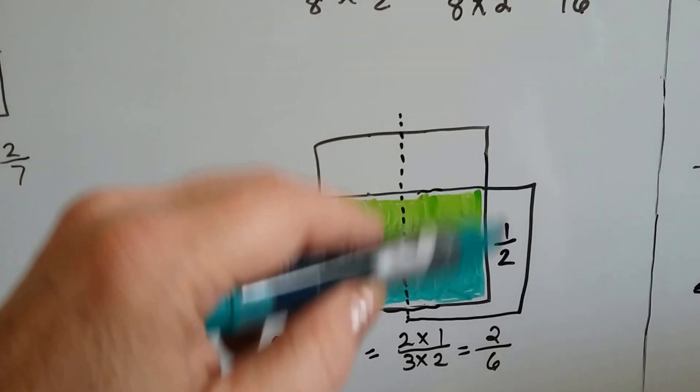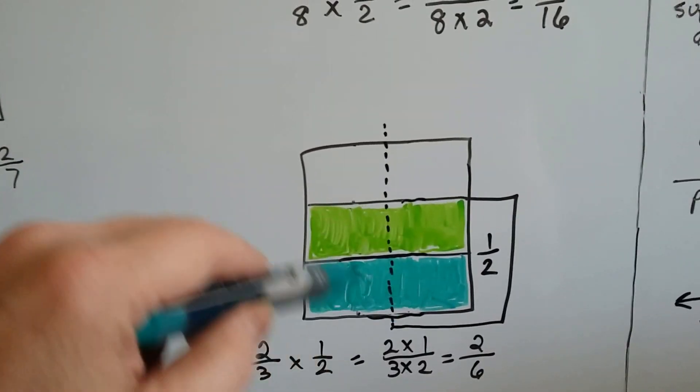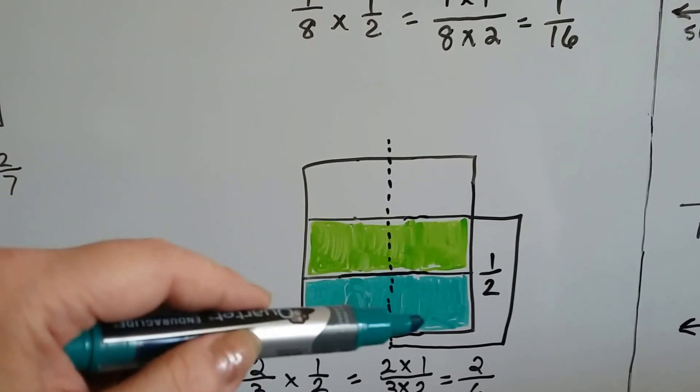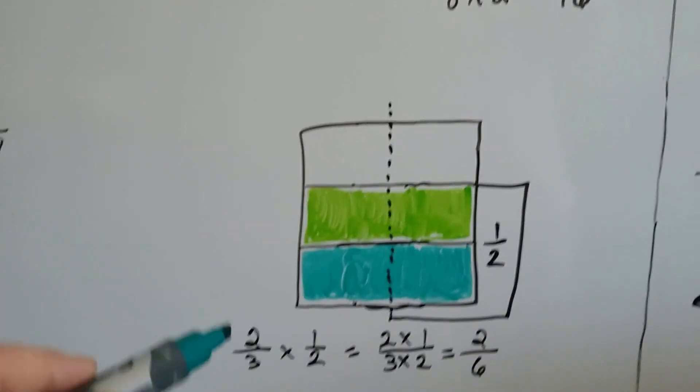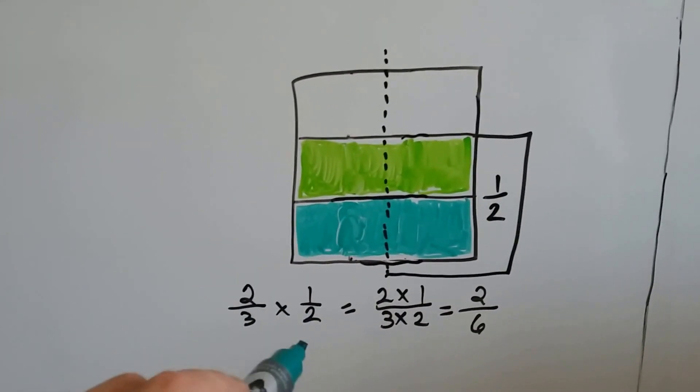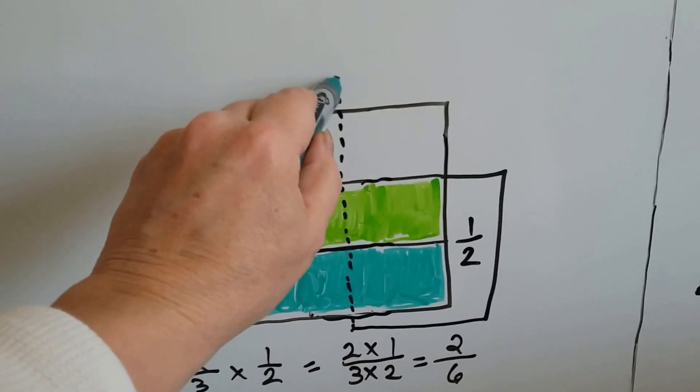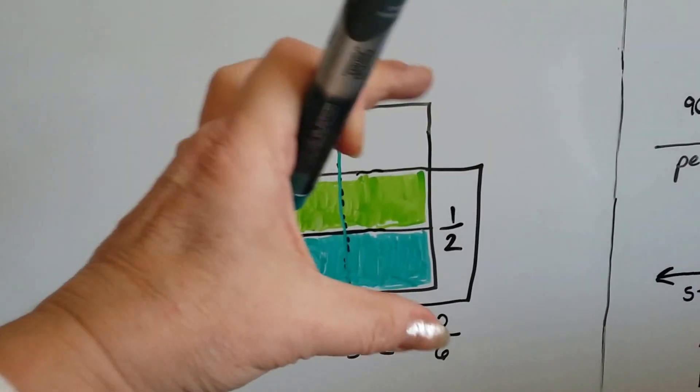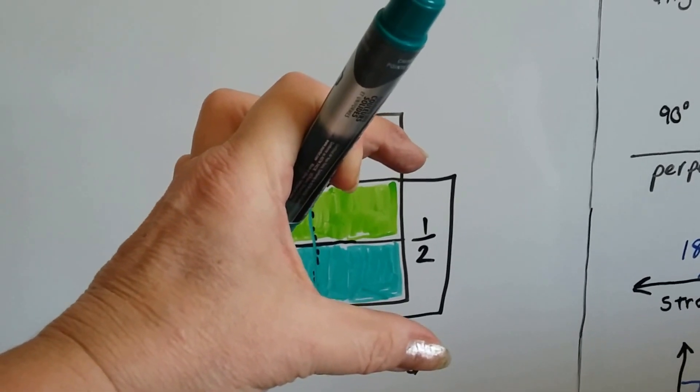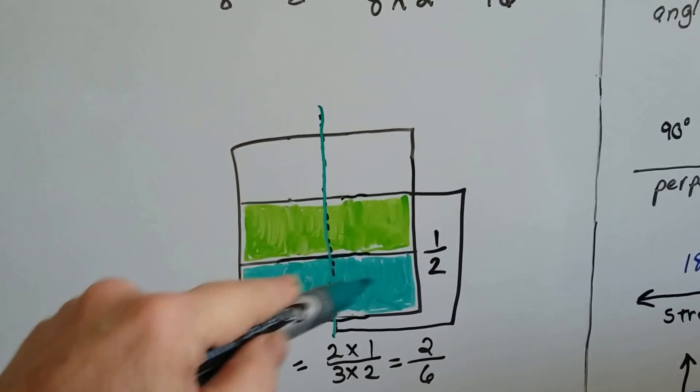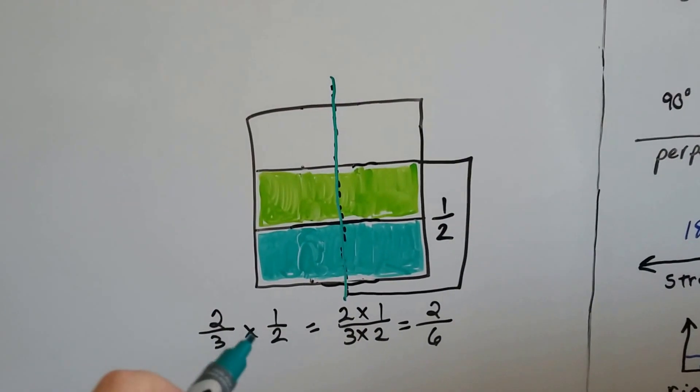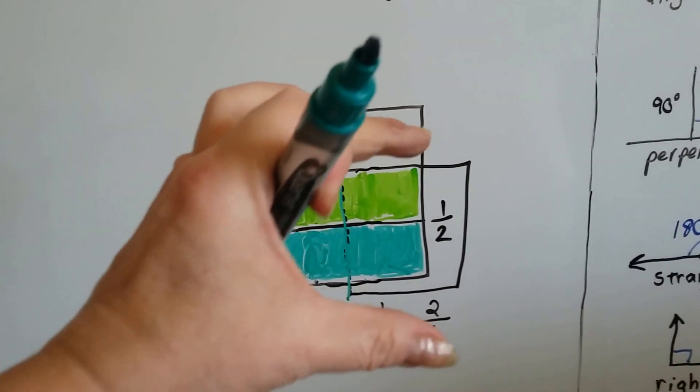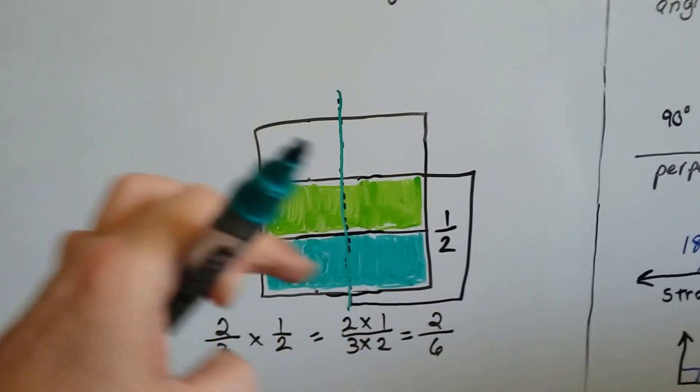If we had 2/3 of a box filled in. 1/3, 2/3, 3/3. And we had 2/3 of them filled in. And we multiplied the 2/3 times 1/2. We're pretty much just cutting that box in half like that. And then here's the half of the 2/3. We've now created 6. So 2/3 times 1/2 is going to be 2/6. It's going to be these 2 little parts out of the 6.